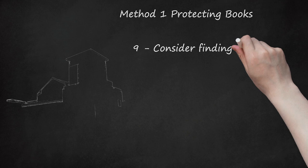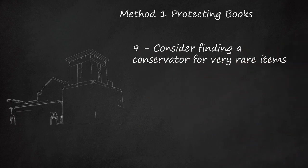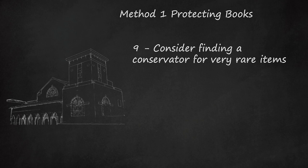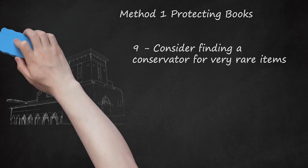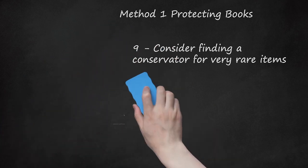Consider finding a conservator for very rare items. If you have some first editions or especially rare books that you're concerned about taking care of yourself, consider enlisting a professional to care for your books for you. Museums, libraries, and private rare book collectors may be a better place for those items. The American Institute for Conservation, AIC, offers a variety of conservators you can enlist.